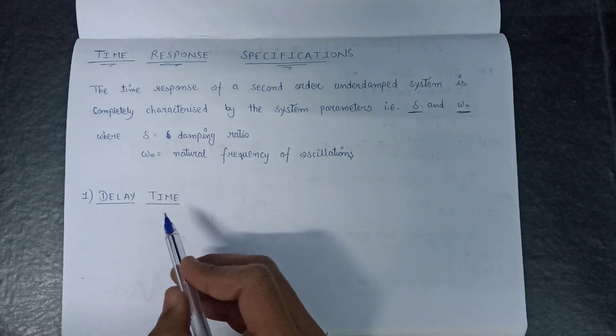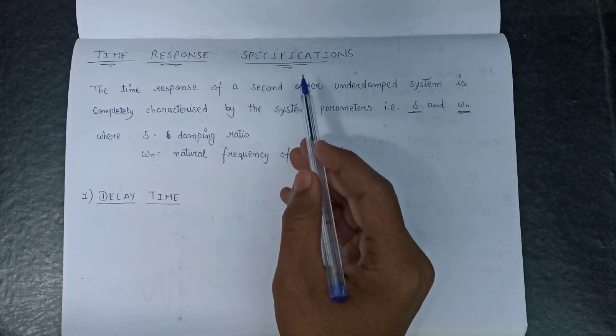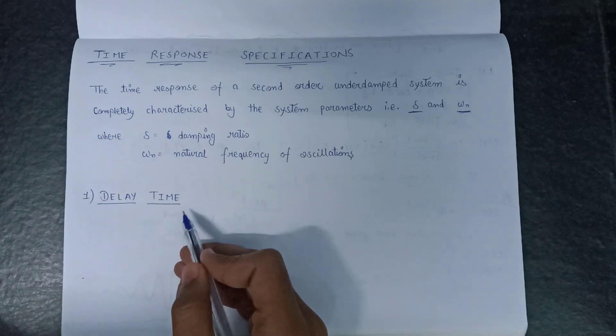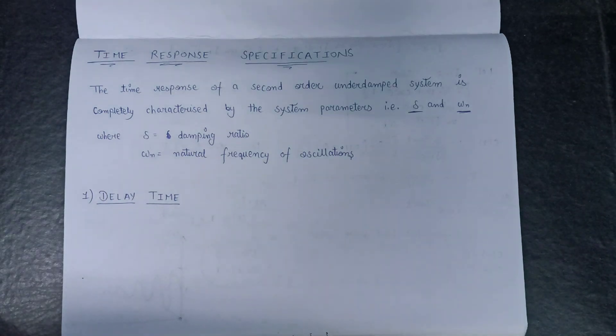There are five time response specifications. The first time specification is delay time. It is the time required for the response to reach 50% of the final value in the first attempt.